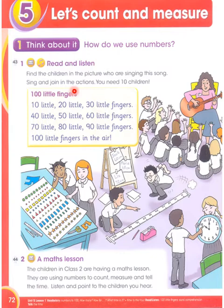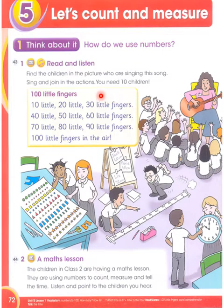Sing and join in actions — you need ten children. Is gaane ko gaane ke liye aap ko das bachche chahiye hote hain, kyunki is mein aapki jo fingers hain wo count hongi. To chhoti si — aapki is ka naam hai hundred little fingers.